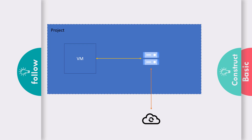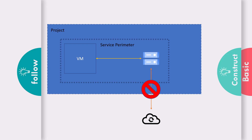Let's assume I have a project with a virtual machine and a Cloud Storage bucket. I'm able to access this Cloud Storage both using the virtual machine as well as the internet. Once I create the perimeter, I cannot access that particular Cloud bucket from the internet anymore. If I need to access it from the virtual machine, I need to create a DNS with a restricted domain called restricted.googleapis.com, and that API should be pointing to a set of virtual IP addresses.